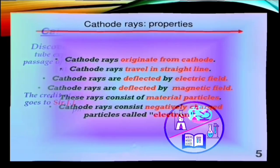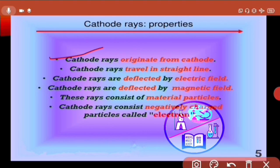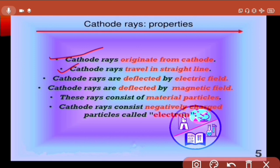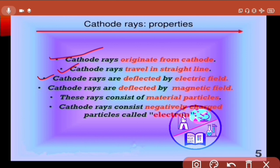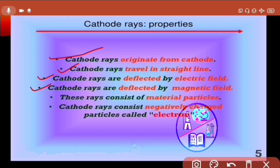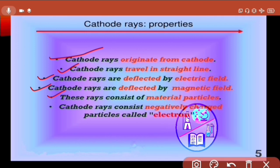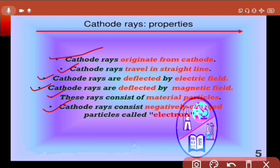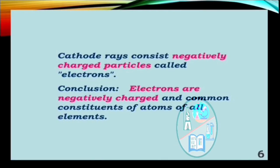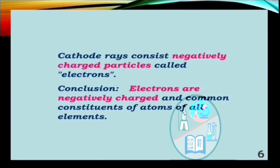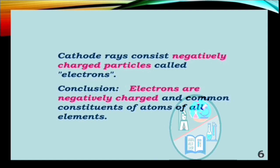The properties of cathode rays are as follows: cathode rays originate from cathode. Cathode rays travel in straight line. They are deflected by electric and magnetic field. These rays consist of material particles. And finally, cathode rays consist of negatively charged particles called electrons. And hence concluded that electrons are negatively charged and common constituents of all atoms of the elements.